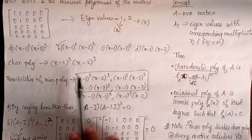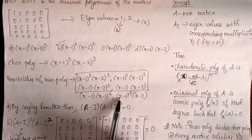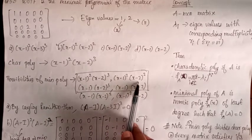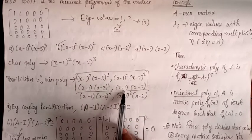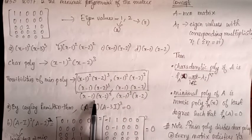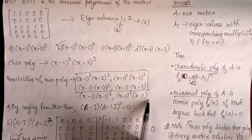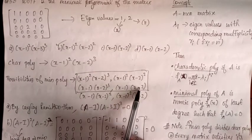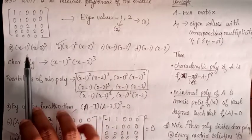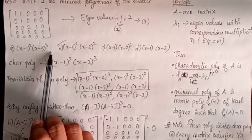For the minimal polynomial possibilities, the characteristic polynomial is (x-1)²(x-2)³, and the minimal polynomial must divide the characteristic polynomial. The possibilities include: (x-1)²(x-2)², (x-1)(x-2)³, (x-1)(x-2), (x-1)(x-2)², (x-1)²(x-2), and (x-1)²(x-2)³.